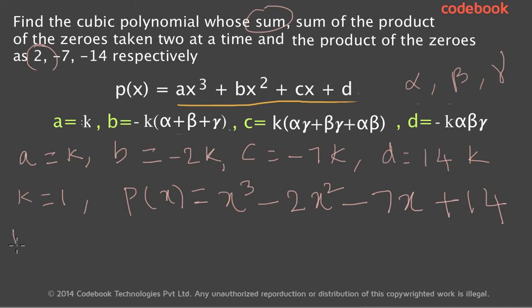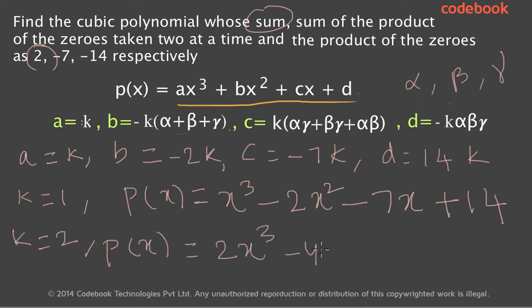Similarly, you can substitute other values for k. For example, if k equals 2 you get a new cubic polynomial: 2x cubed minus 4x squared minus 14x plus 28. In this way, using the relationships between the coefficients and the roots, we have been able to find the cubic polynomial satisfying the conditions given in the problem.